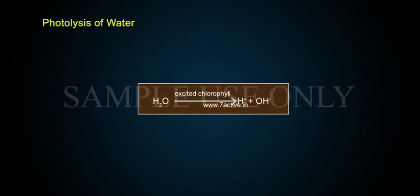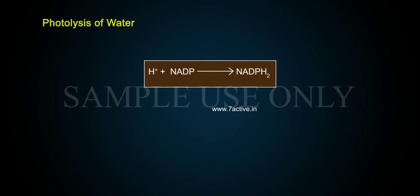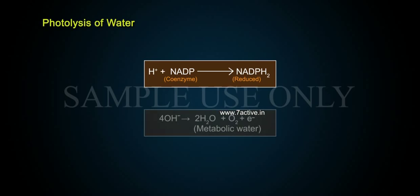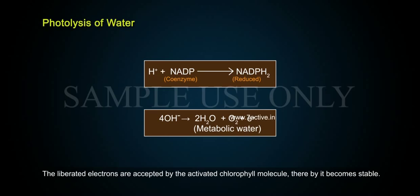In the presence of excited chlorophyll: H2O gives H+ + OH-. H+ + NADP+ (coenzyme) gives NADPH2 (reduced). 4 OH- gives 2H2O (metabolic water) + O2 + electrons. The liberated electrons are accepted by the activated chlorophyll molecule, thereby stabilizing it.